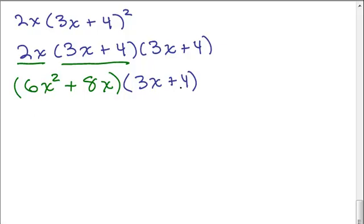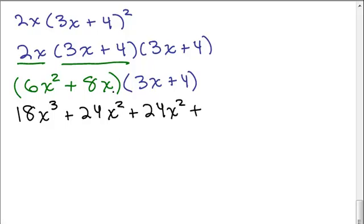And now we have a binomial times a binomial. So we could do the FOIL method. Why don't you put it on pause and try this on your own and then come back and see if you get the same answer I get. So we have 6x squared times 3x. That's going to be 18x cubed. The outer term is going to be plus 24x squared. And the inner term is going to also be plus 24x squared. And the last term 8x times 4 will be 32x.